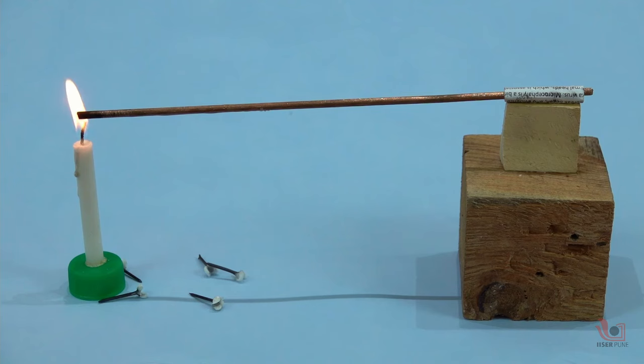Hence, the nails fall down subsequently from the copper rod. This process of heat transfer is known as the conduction of heat. In conduction, the transfer of heat from one atom to another is accomplished by the direct contact of the atoms of the copper rod.